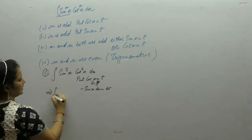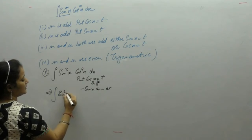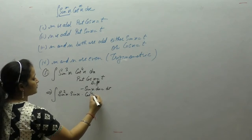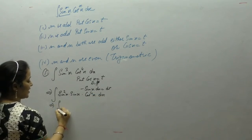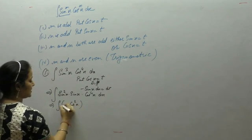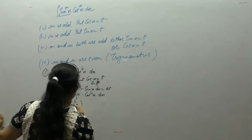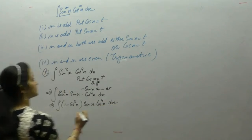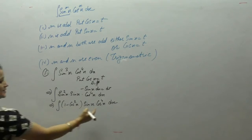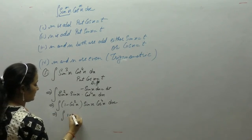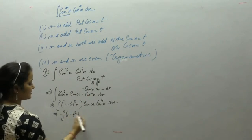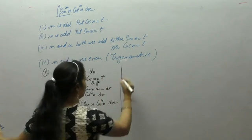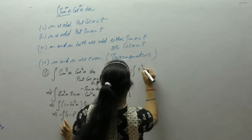We write sin³x as sin²x · sin x · cos⁴x dx. In place of sin²x, we use the identity 1 − cos²x, giving (1 − cos²x) · sin x · cos⁴x dx. Now putting cos x = t, we get (1 − t²)(−dt) · t⁴, which gives −t⁴ + t⁶.